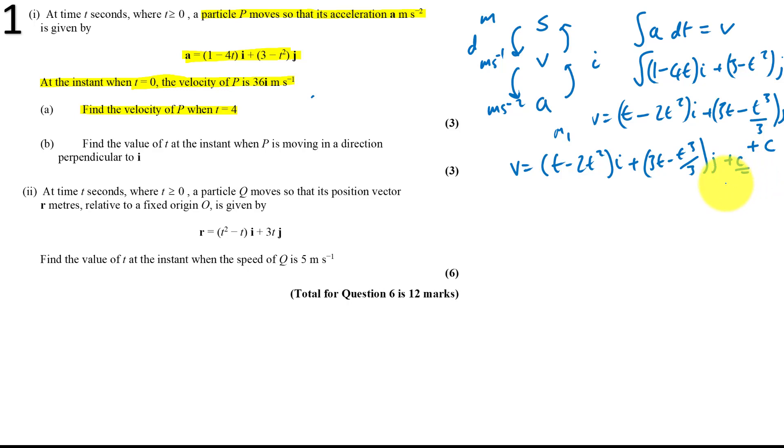How can we find C? Well, it's just information I told you at the start. When t equals 0, the velocity of P is 36. So let t equals 0. Let's just write that down, it doesn't take us much time. So V is 36i. Yeah, that means V equals 36i, t equals 0. Equals, that's all going to be 0, plus 0. So C equals 36i. So that's it, we're done there.